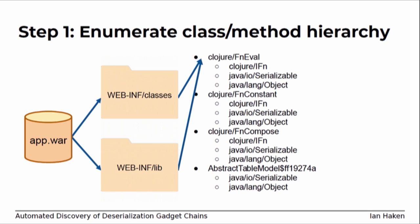The first step is just enumerating everything on your class path: figuring out the whole class hierarchy and all the method hierarchies, so that when you see a method call from one magic method — like HashMap calling hashCode — you know what all the implementations of hashCode are that you might jump to. You can use the plain old Java reflection APIs to do that. It's not terribly difficult, but it's an important first step for the rest of the analysis.